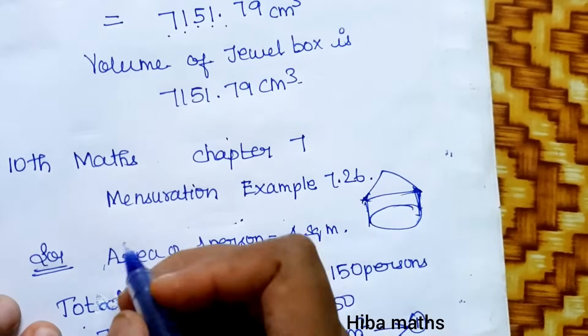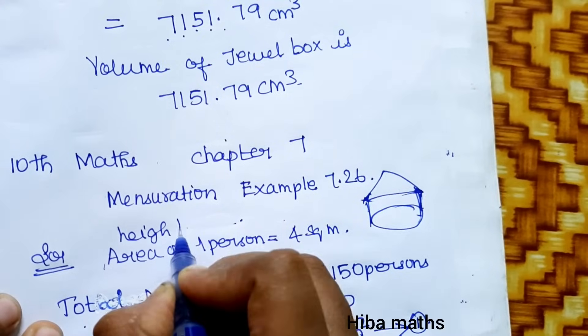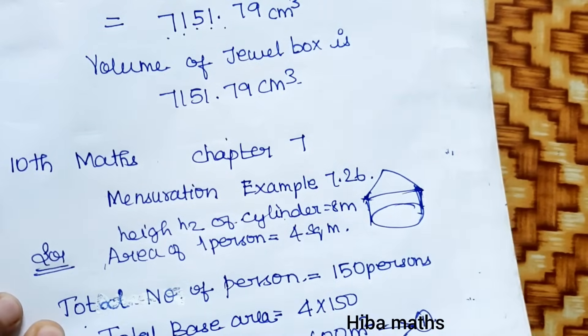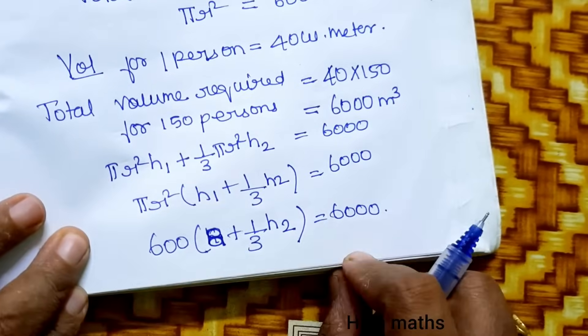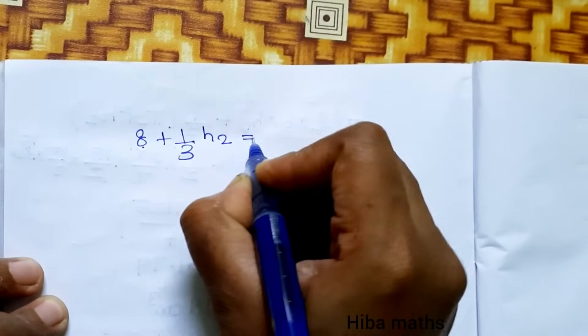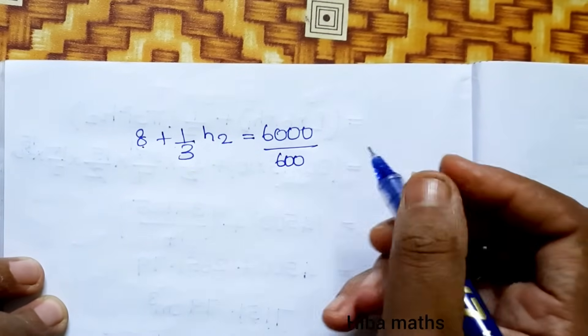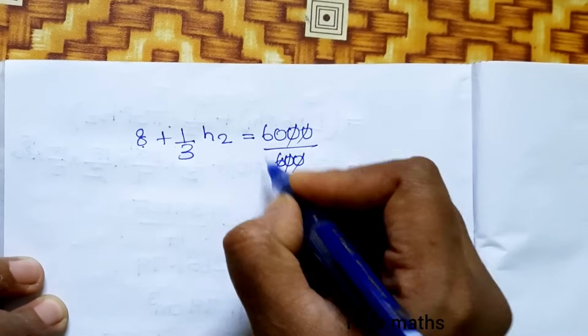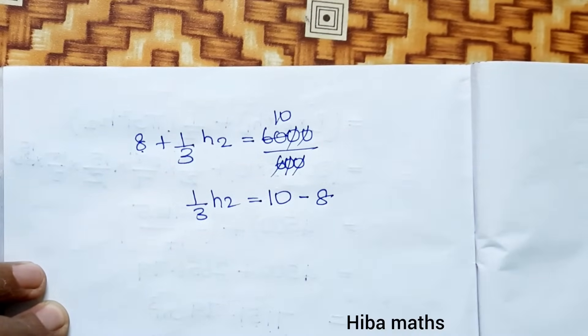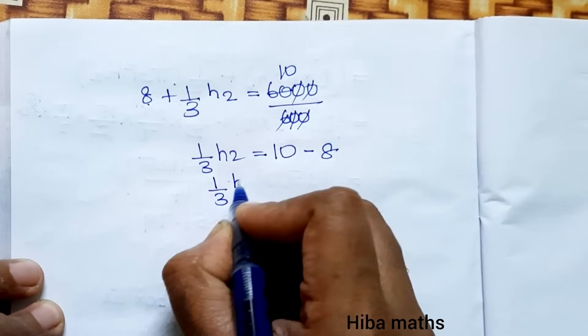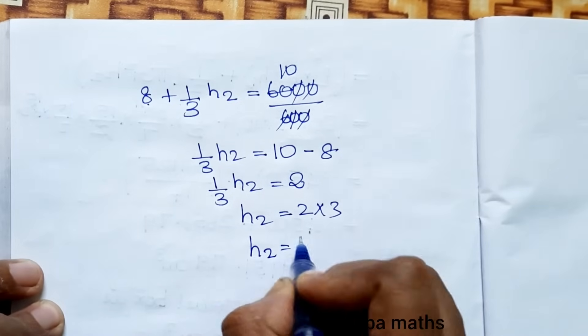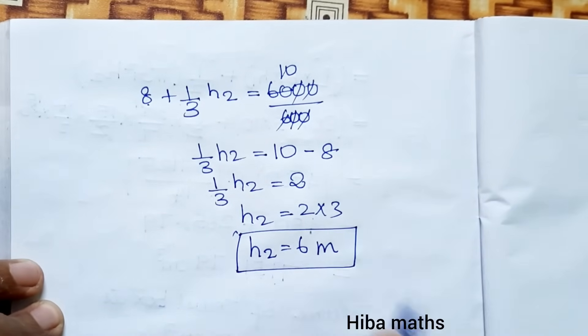You can see the given height h1 of cylinder is 8 meters. Dividing by 600, we get 8 plus (1/3)h2 equals 10. Subtracting 8 from both sides, (1/3)h2 equals 2. Multiplying by 3, h2 equals 6 meters. So the cone height is 6 meters.